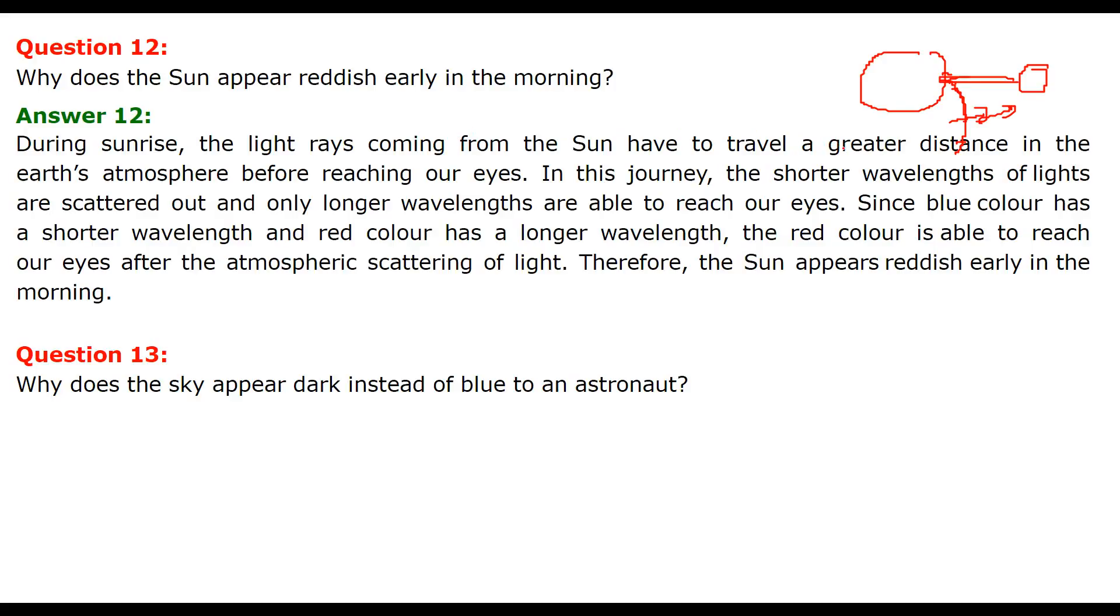In this course or in this journey, the shorter wavelength of light are scattered out because of the Rayleigh and Mie and other scattering. There is a formula for that, and we know that they are scattered out. Only longer wavelengths reach our eye. And we know that the blue color has the shortest wavelength in our sunlight, and the red color has longer wavelength. So the red color is able to reach because it has longer wavelength. That is why it reaches our eyes, even after the atmospheric scattering of light has washed away or taken away the blue component or the other components. So sun appears reddish early in the morning and in the evening also, the same scenario happens.